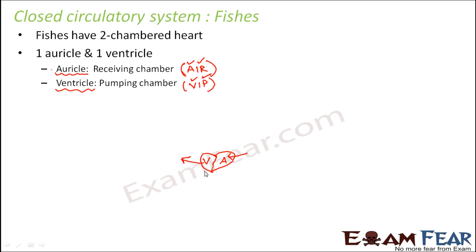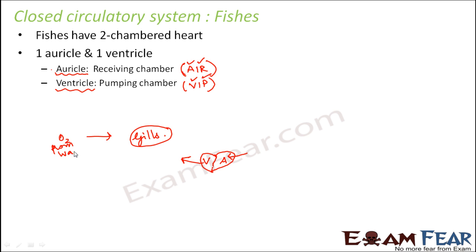These are the two chambers present in the heart of a fish. Now, how does blood circulation take place? All living organisms need oxygenated blood — blood rich in oxygen — to supply oxygen to their cells. They also need to send out deoxygenated blood rich in carbon dioxide, produced as a byproduct of respiration. Fishes take in oxygen dissolved in water through specialized structures called gills.